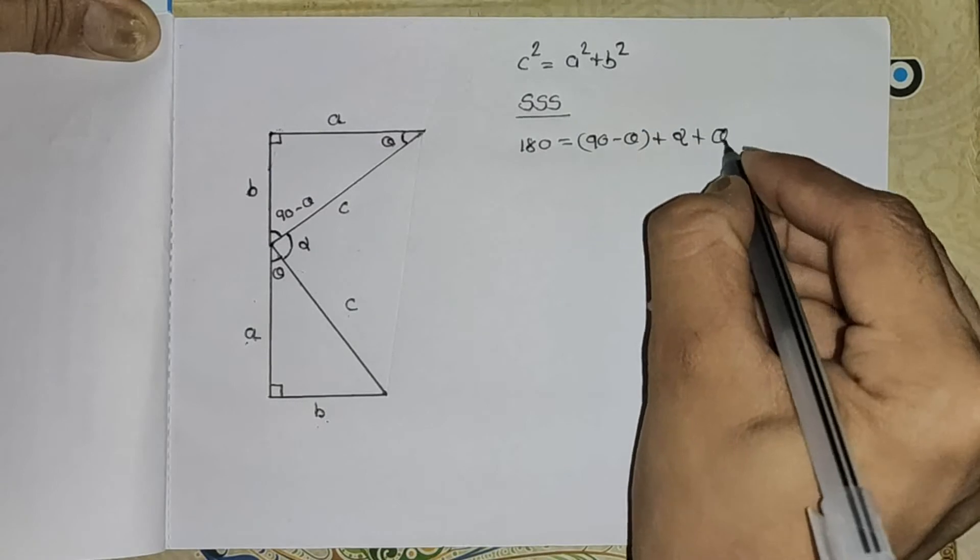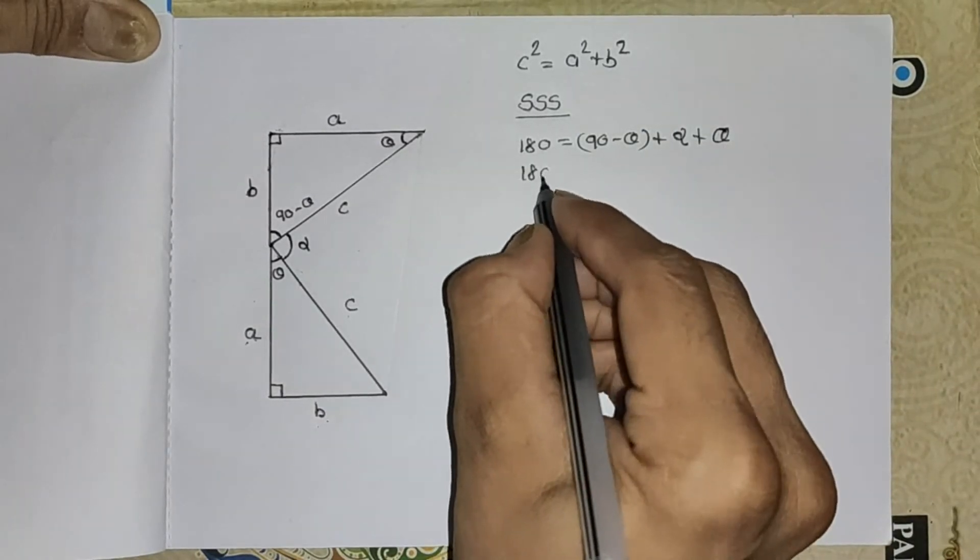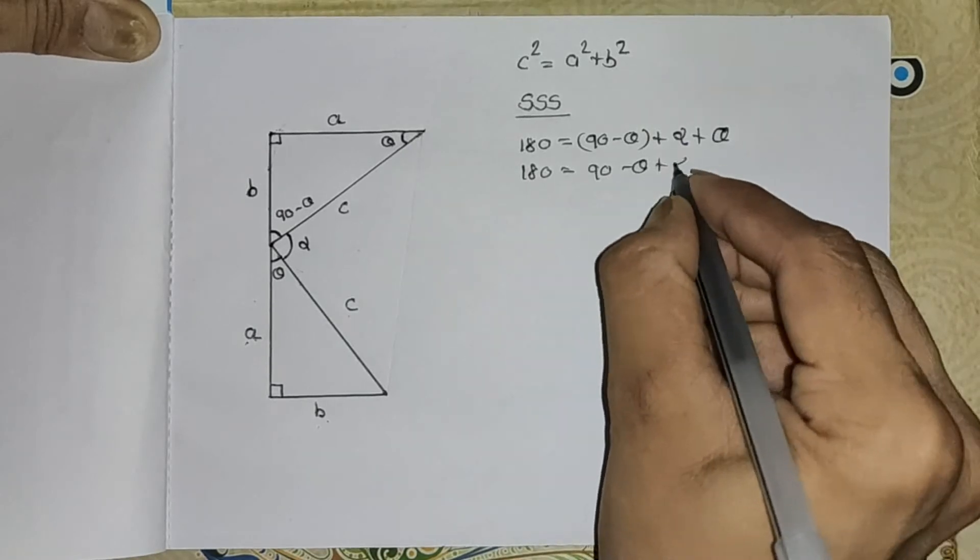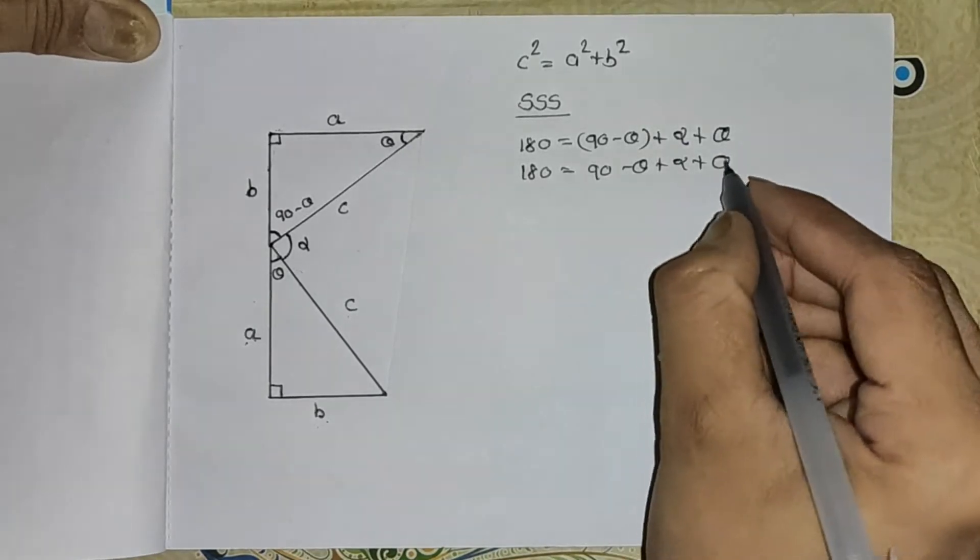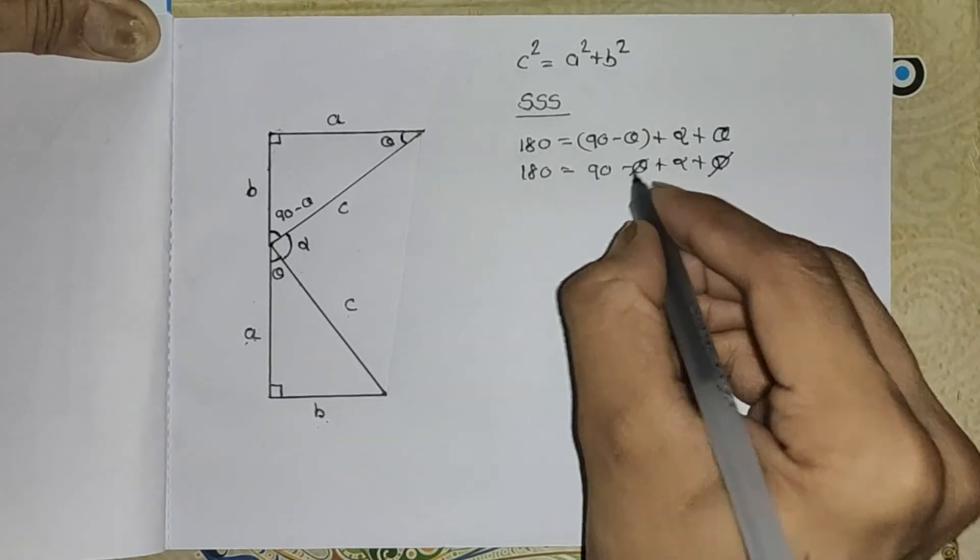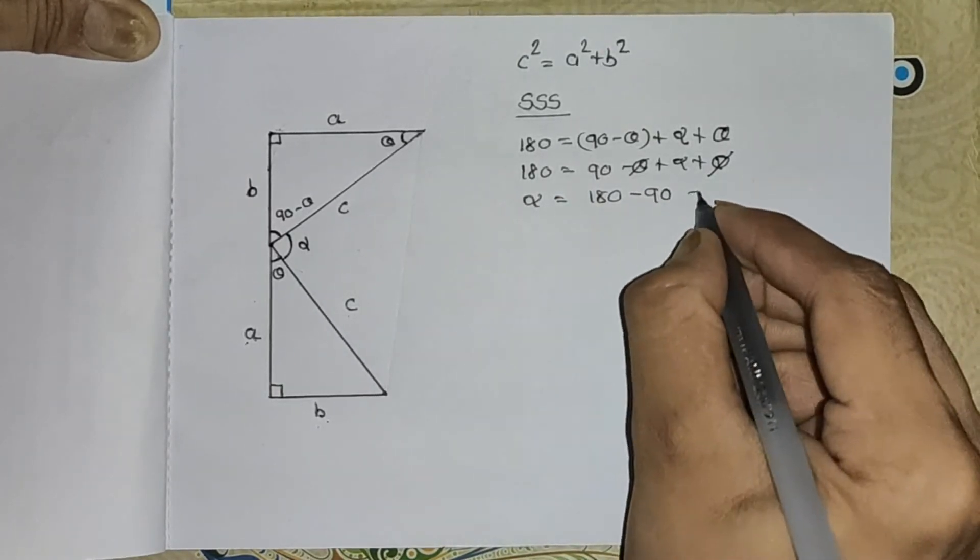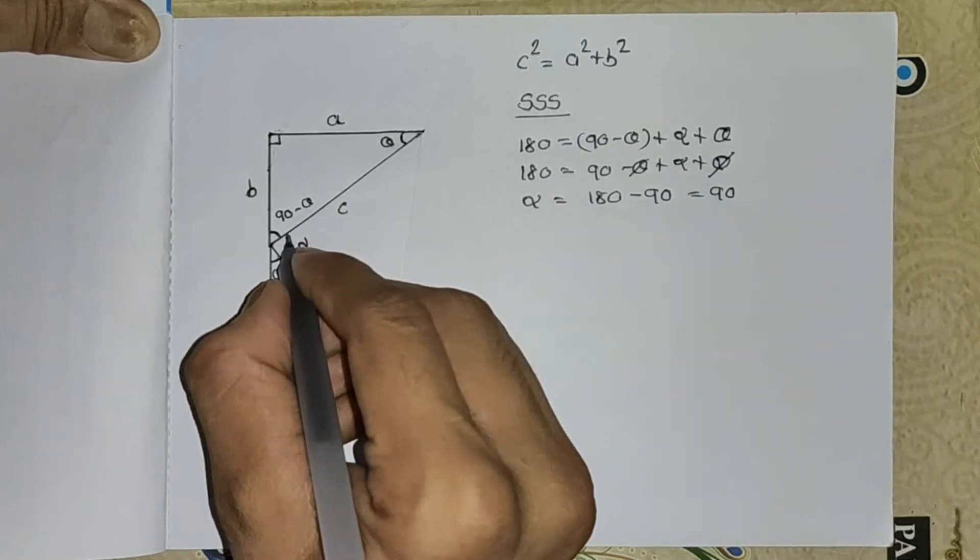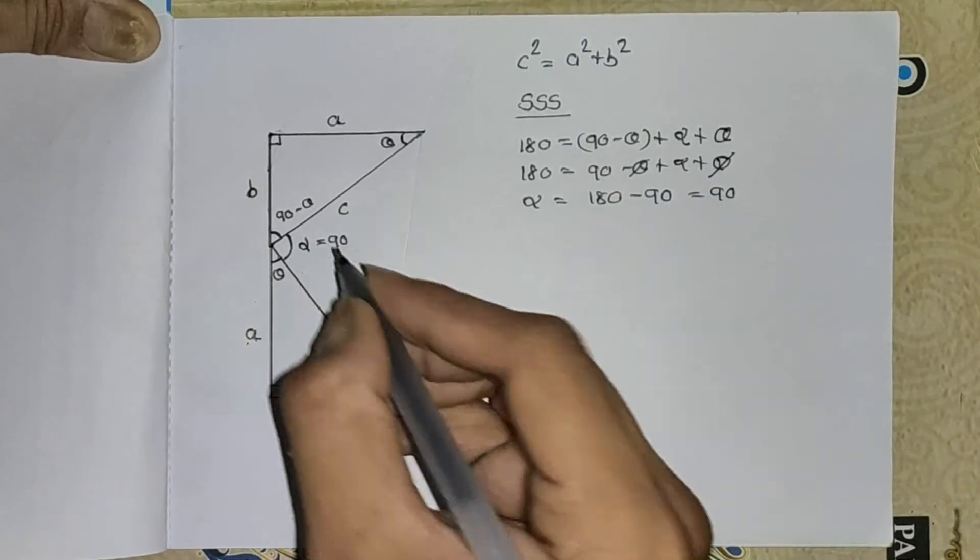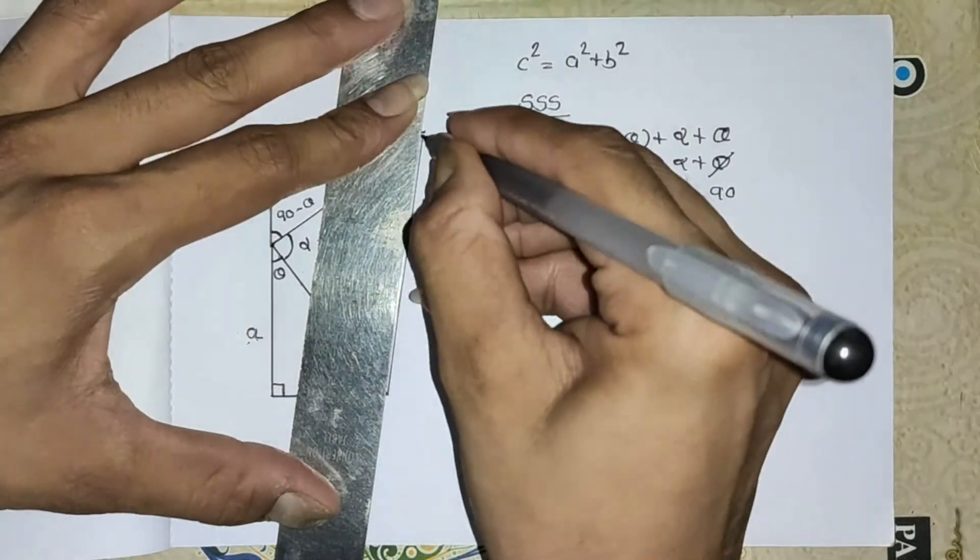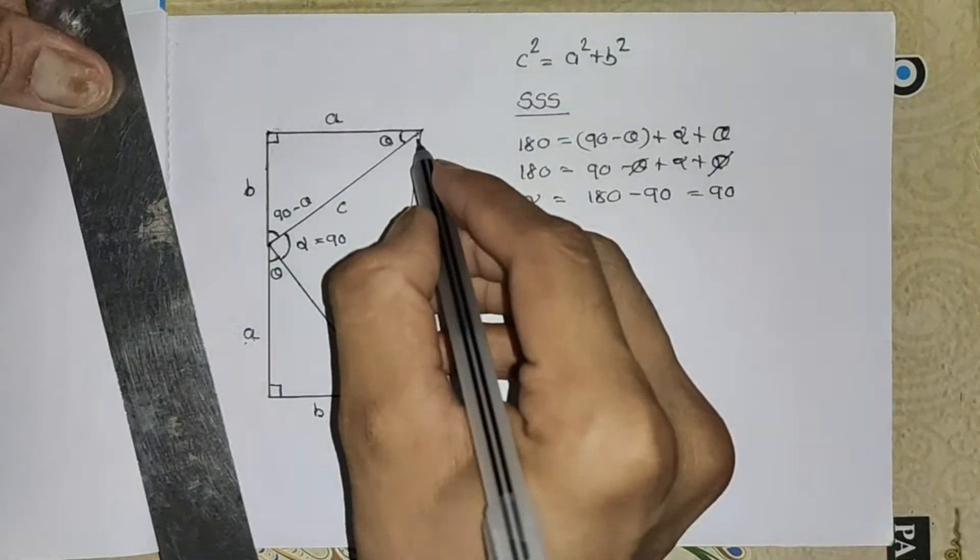The whole angle is 180. 180 equals, I take this one as alpha, 90 minus theta plus alpha plus theta. Theta cancels, so alpha equals 180 minus 90 equals 90. So alpha equals 90 degrees and I joined these both points, so this angle is also a right angle.